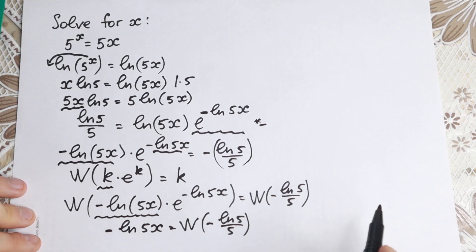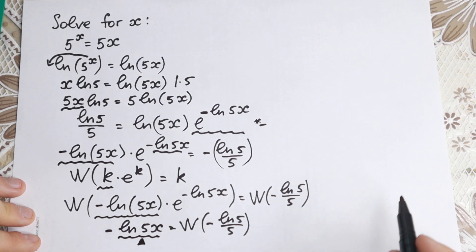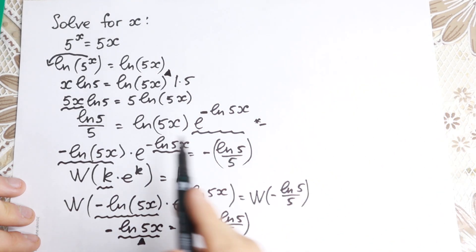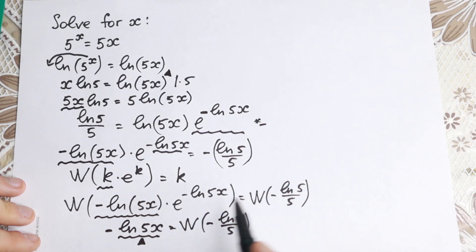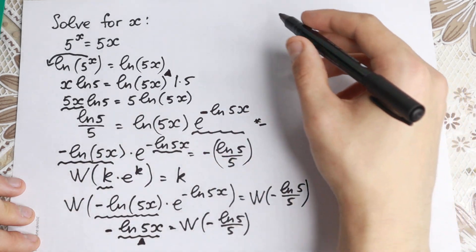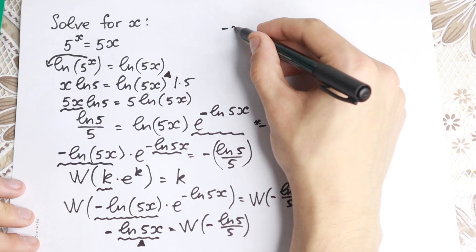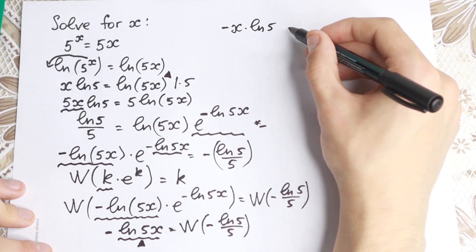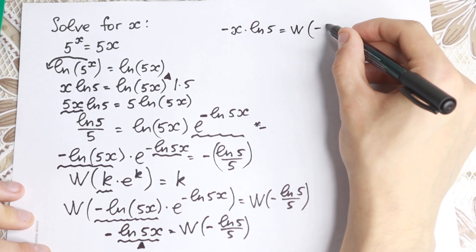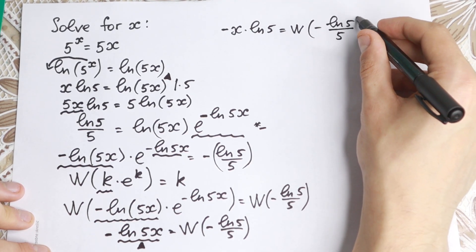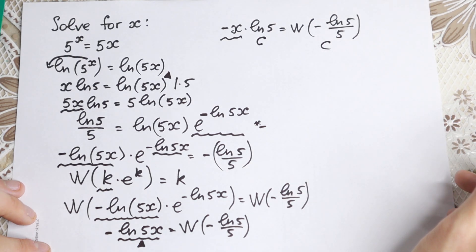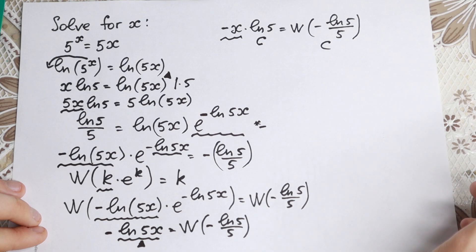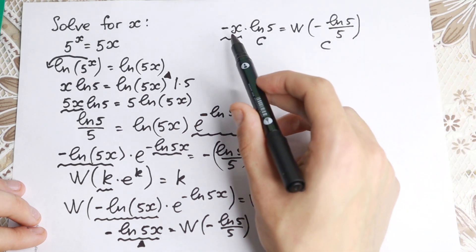Now I want to show a really good moment. We have ln(5x) here — let me mark it with a triangle. We also have ln(5x) on the other side. But ln(5x) equals x times ln 5, so we can substitute this element. We get minus x times ln 5 equal to Lambert W of (minus ln 5 over 5). Then dividing both sides by minus ln 5, we isolate x.